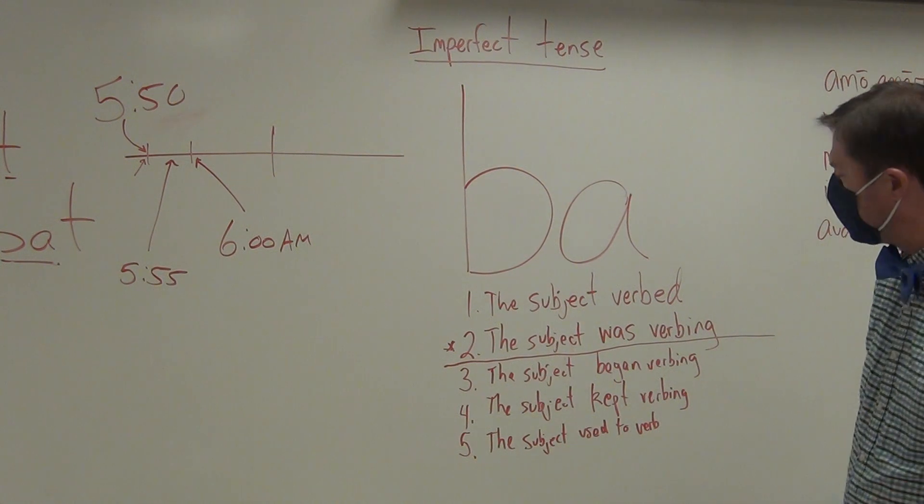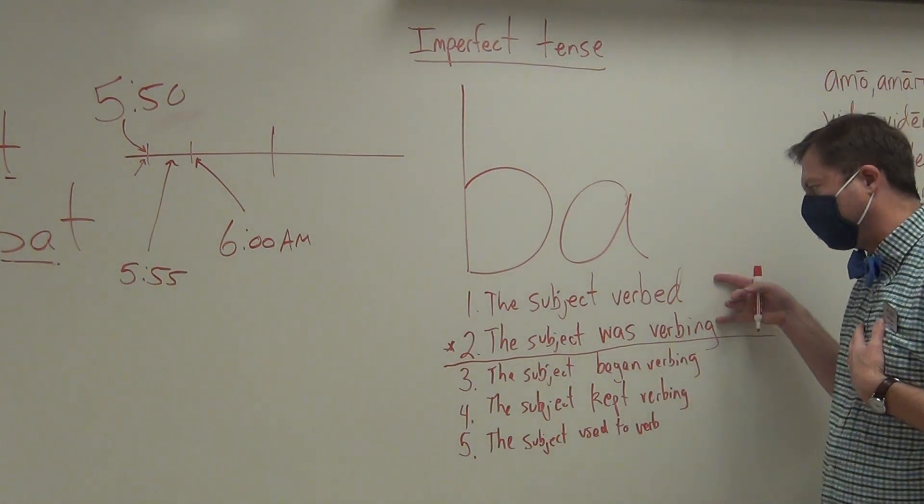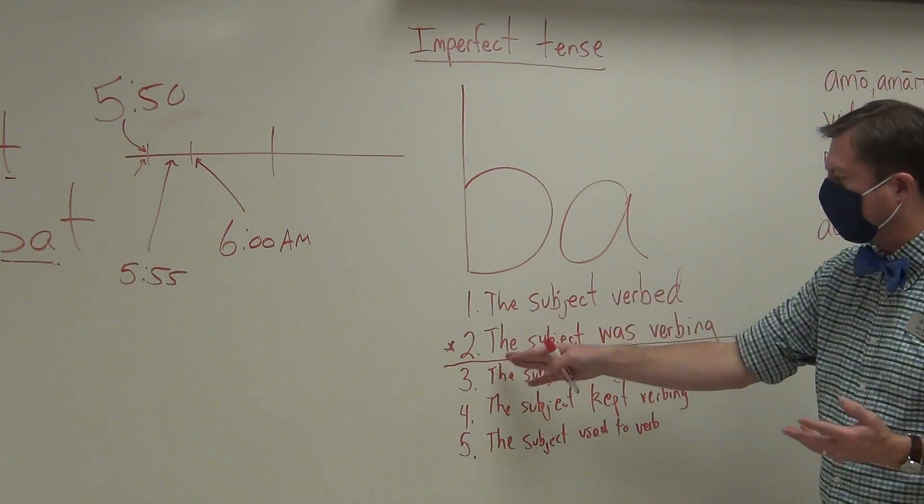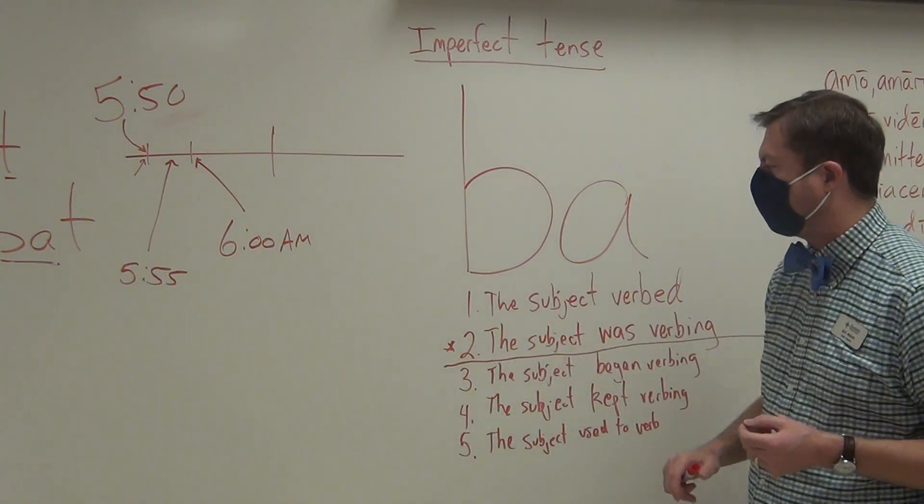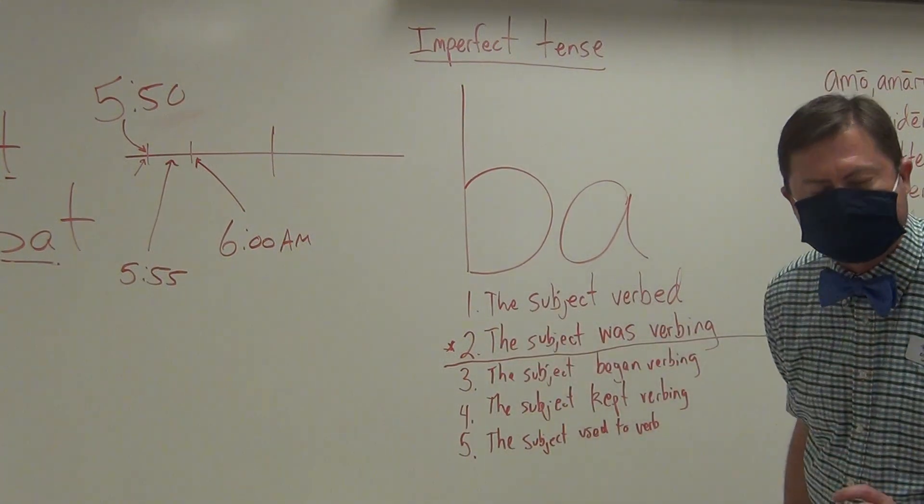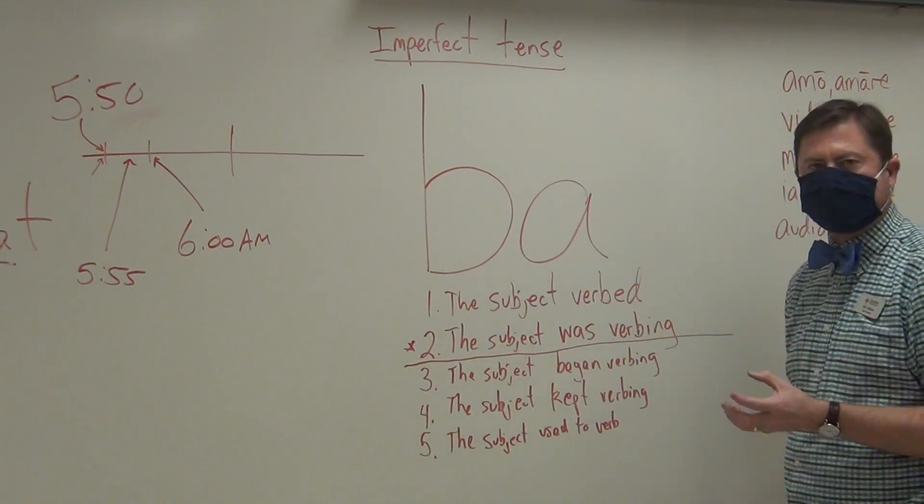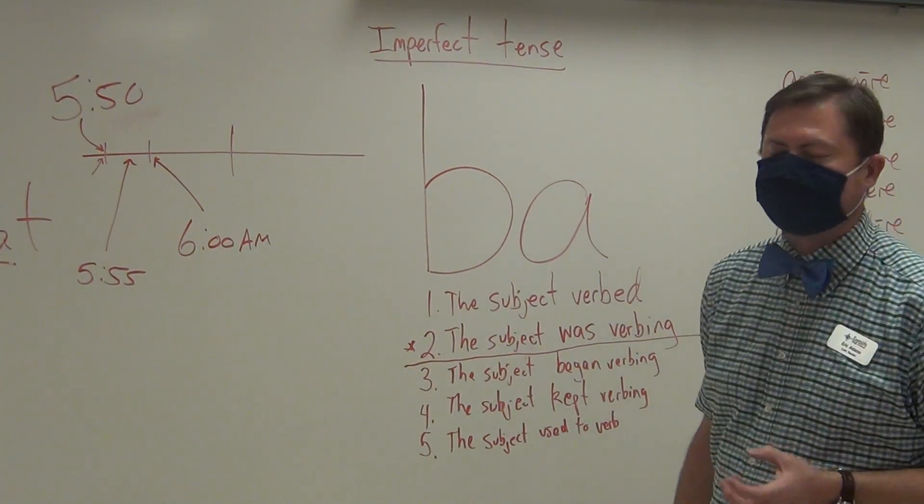But I only want you to use, for the most part—now Ecce Romani will use several expressions—the subject verbed, or the subject was verbing. And why does the subject was verbing, why does that one have an asterisk? Because that is the expression in English in which it emphasizes the fact that it is a non-completed action.